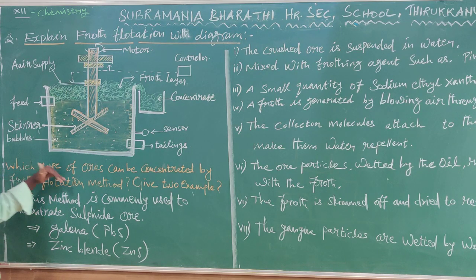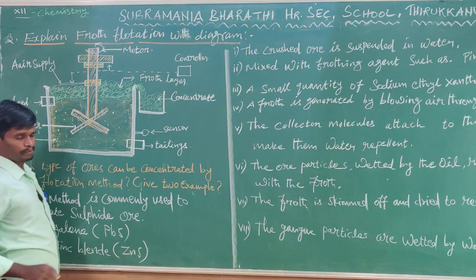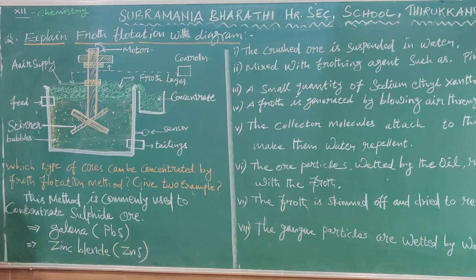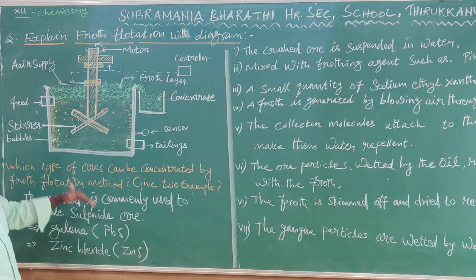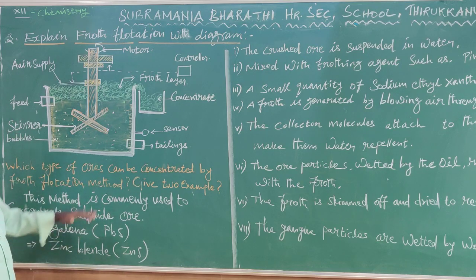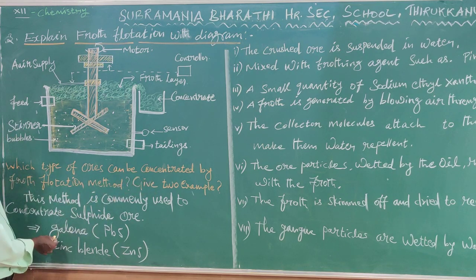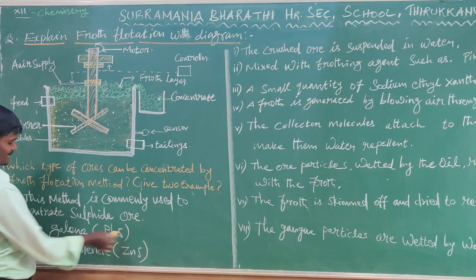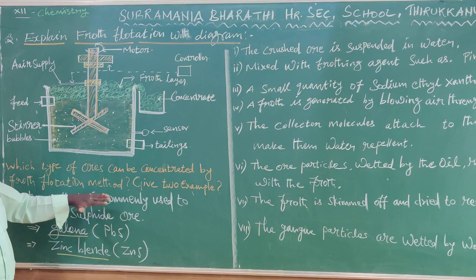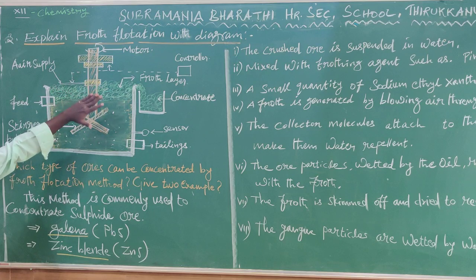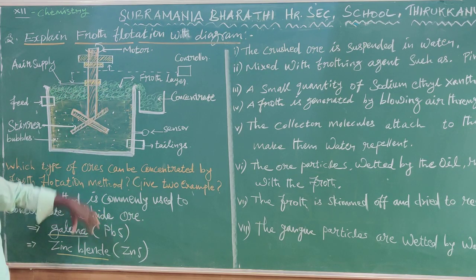Which types of ore can be concentrated by the flotation method? Answer: This method is commonly used to concentrate sulphide ore. For example, Galena (PbS) and Zinc sulfide (ZnS). The sulphide ore is commonly separated using this method — sulphide ore content we find it.